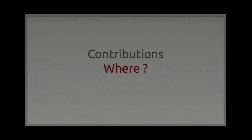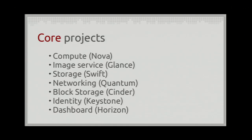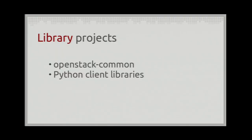I'll introduce a topology of the different types of contributions. One way to look at it is where does your contribution actually land. We have what we call the core projects - those are the main deliverables, the core services that we deliver. That's far from being the only project you can contribute to. We have what we call the library projects - there is OpenStack Common, soon to be renamed Oslo, which takes all the common code between the different core projects and makes a common library used by multiple core projects. We have the Python client libraries, which are used by clients to access those core services.